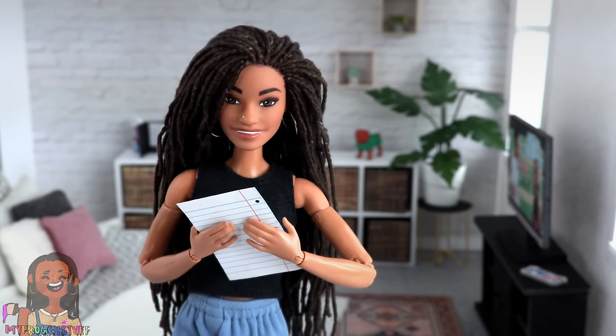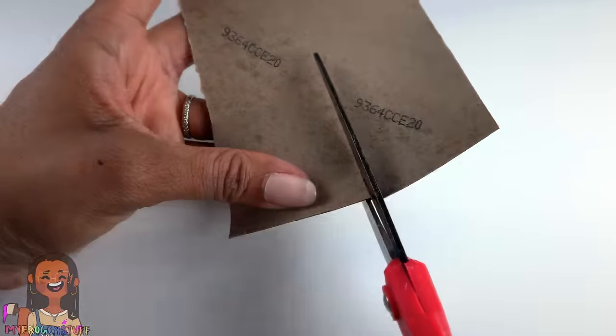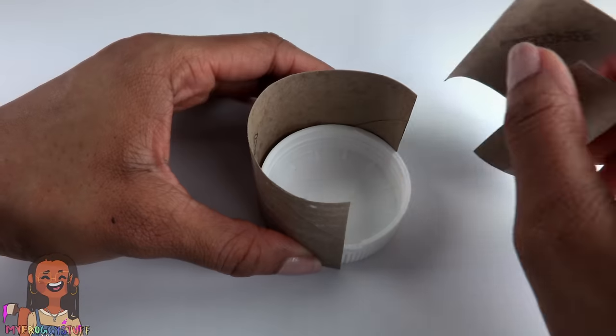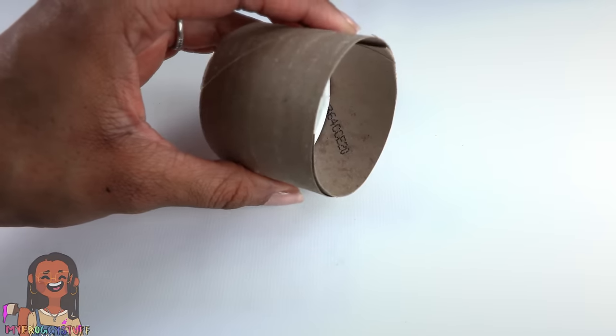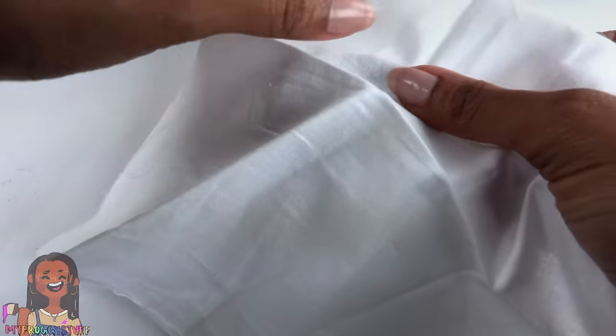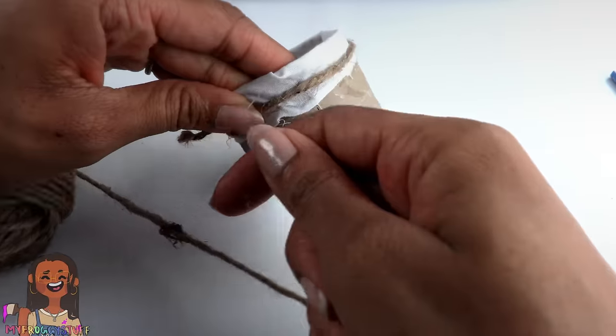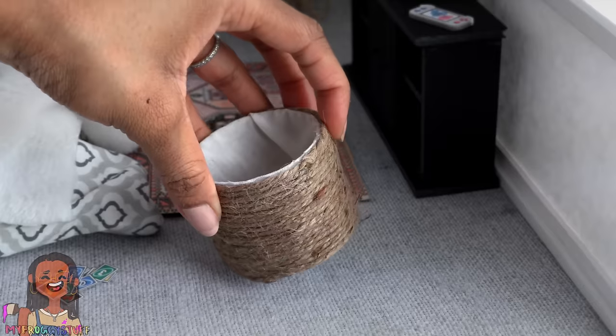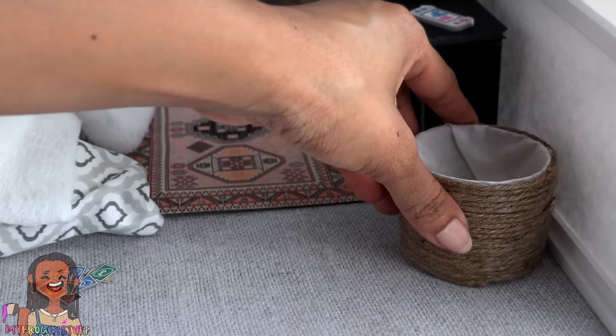Recycle a toilet paper roll. Take a toilet paper roll, cut it up the center, then cut it in half. Glue the two pieces around a plastic lid to make a larger cylinder. Take fabric, push it inside, glue the edges down. Glue twine or yarn around the outside to make a basket for holding blankets, laundry, stuff like that.